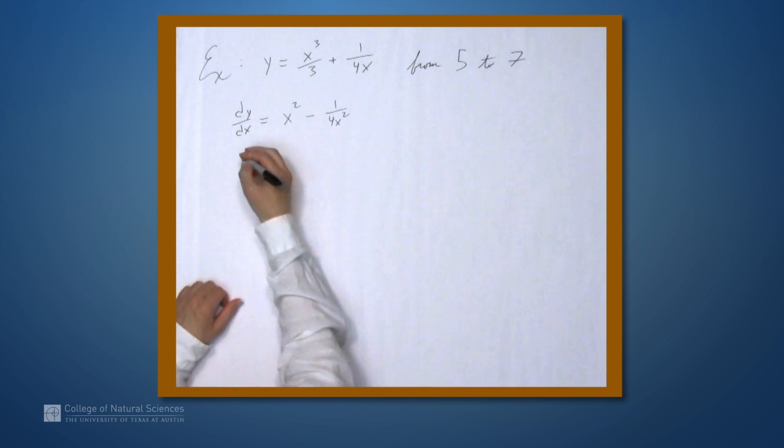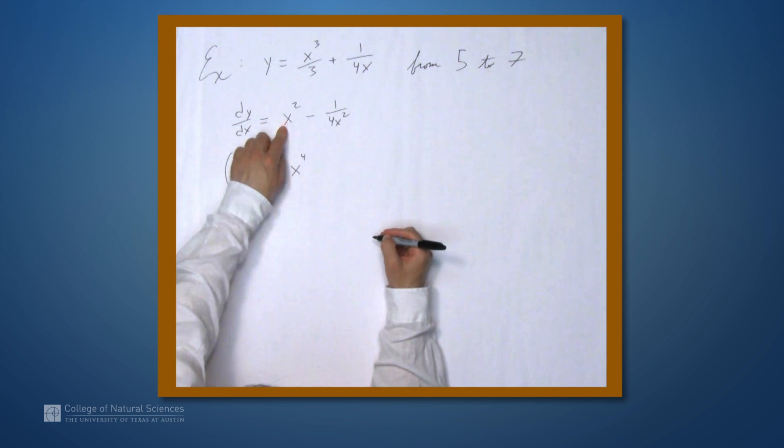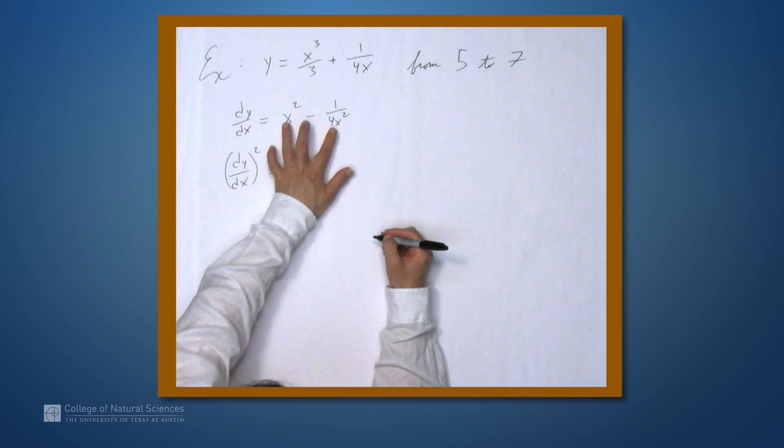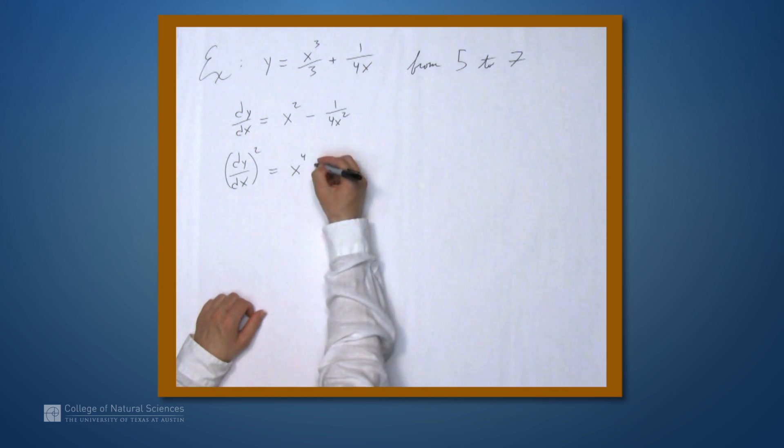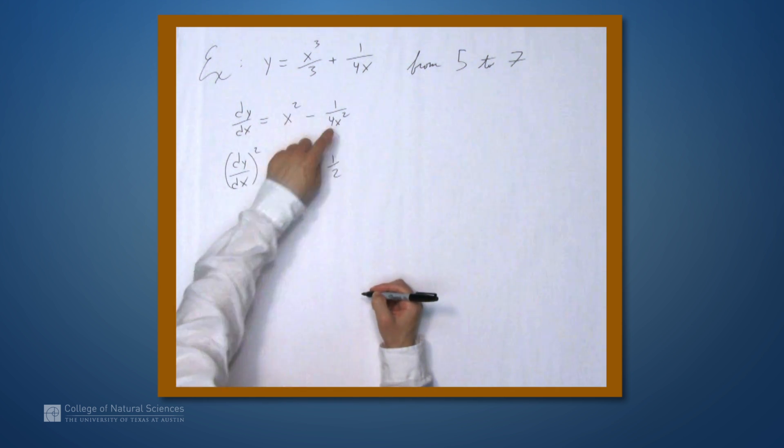Now we want to square this. So dy dx squared is x to the fourth. We square the first term. Then we take the product of these two terms and multiply it by 2, which gives us minus 1 half, because these x squareds cancel out.